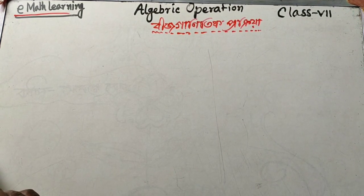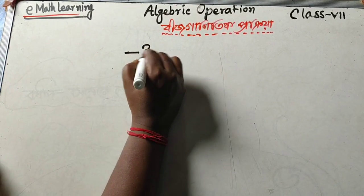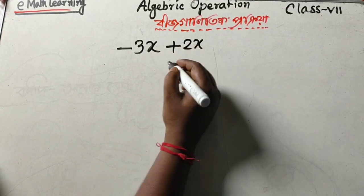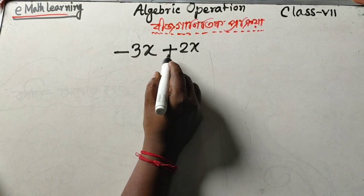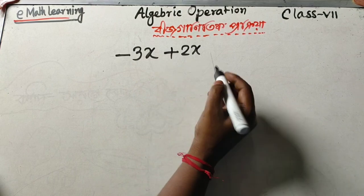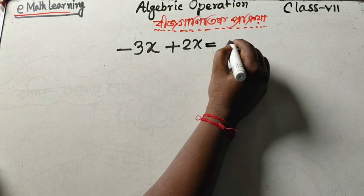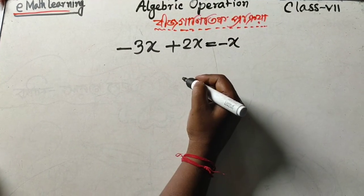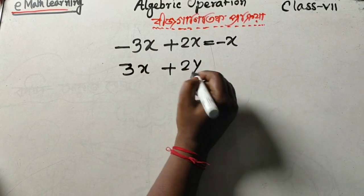Today I am going to show you algebraic operations. We have -3x + 2x = -x. And we have 3x + 2y. Then we have 3x plus 2y.